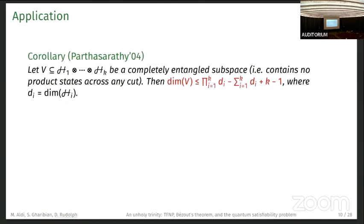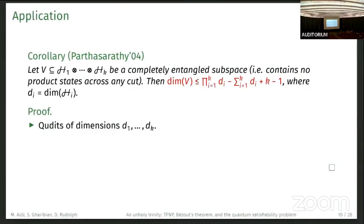One easy corollary, which reproves a result by Parthasarathy, is: if we have some subspace V of a tensor product of Hilbert spaces that is completely entangled, so it contains no product solutions across any cut of these K spaces, then we can upper-bound the dimension by this expression here.